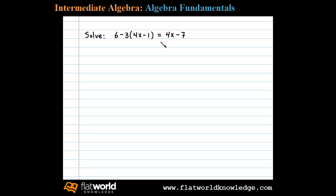Here we're asked to solve a linear equation. It's tempting to say 6 minus 3 is 3, but the order of operations tells us we have to apply multiplication before subtraction. In this case, we need to multiply both of these terms by negative 3. That's where we'll start.